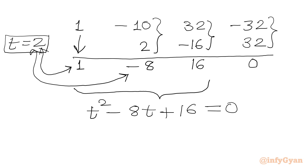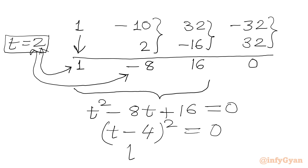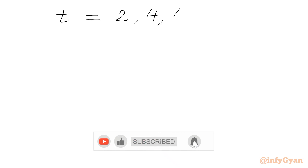This factors as t minus 4 whole squared equal to 0. So t equals 4 and 4. The base solution is 2, and the quadratic gives 4 and 4. In total we have three roots of the cubic equation: 2, 4, and 4.